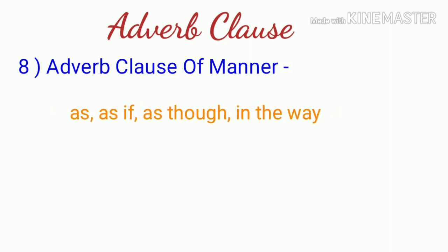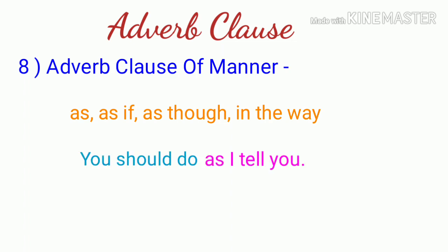The next type is adverb clause of manner - it tells us the manner or riti in which the action is done. These clauses begin with conjunctions like 'as,' 'as if,' 'as though,' 'in the way.' For example: 'You should do as I tell you' - meaning you should do it in the way I tell you. 'You should do' is the main clause, and 'as I tell you' is the adverb clause of manner.